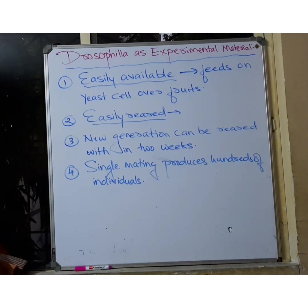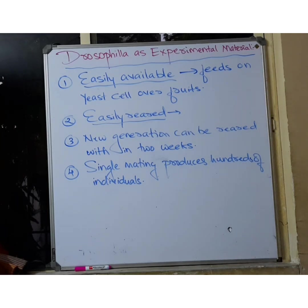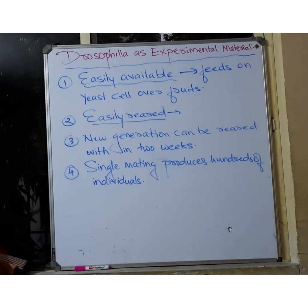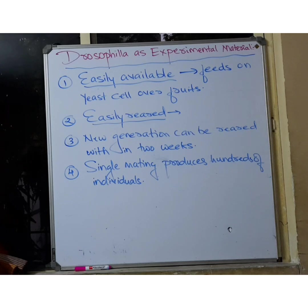A new generation can be reared within two weeks, meaning you do not have to wait long. Every two weeks — twice a month — you can produce a new generation, which makes studying inheritance patterns from generation to generation very easy. Also, a single mating produces hundreds of individuals, giving you a very large sample size for research. Just as Mendel believed in large sample sizes and studied thousands of seeds at a time, here too single mating yields many new individuals.